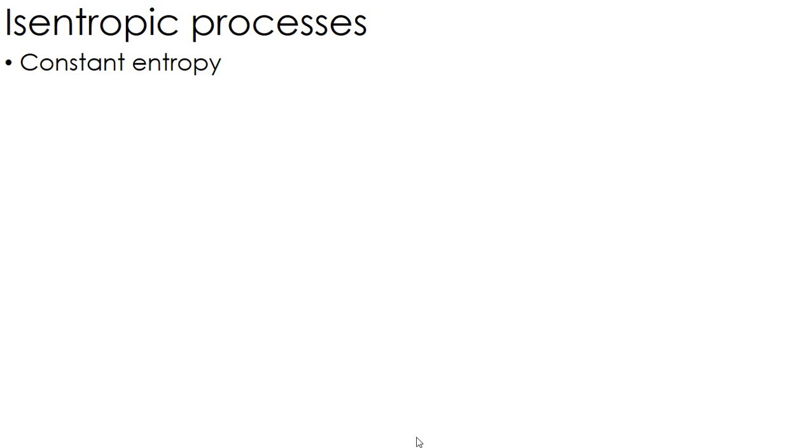We're going to look at isentropic processes, which are constant entropy processes. If we think back to what we talked about earlier, adiabatic and reversible are isentropic.